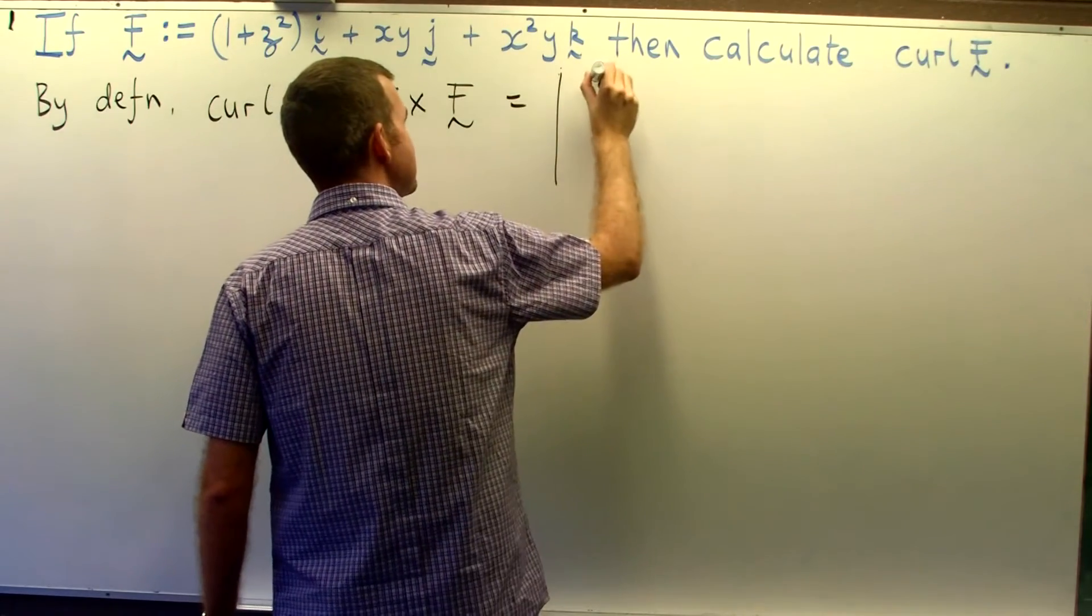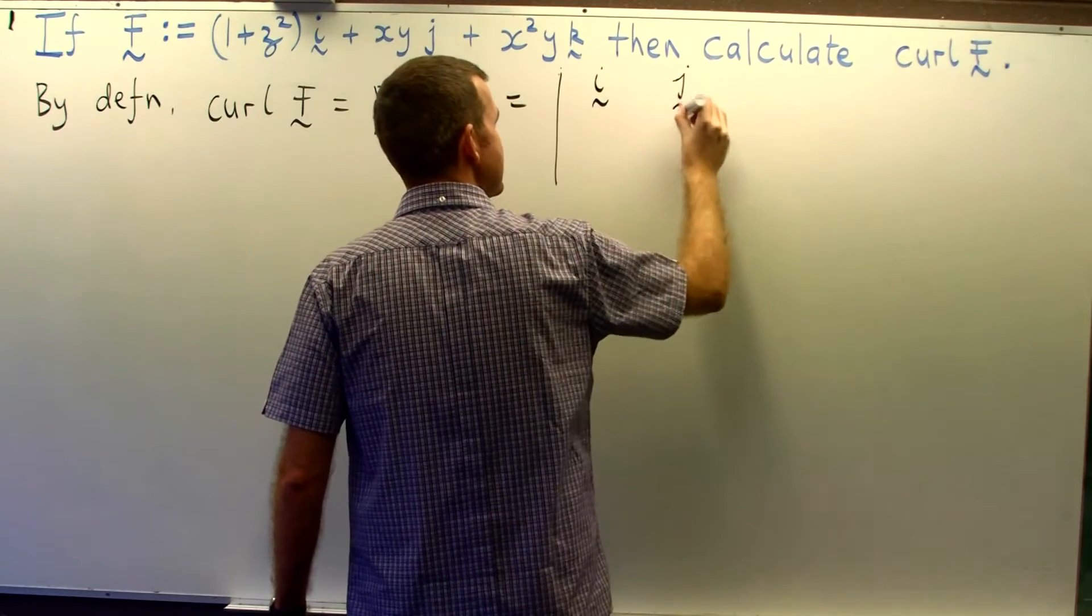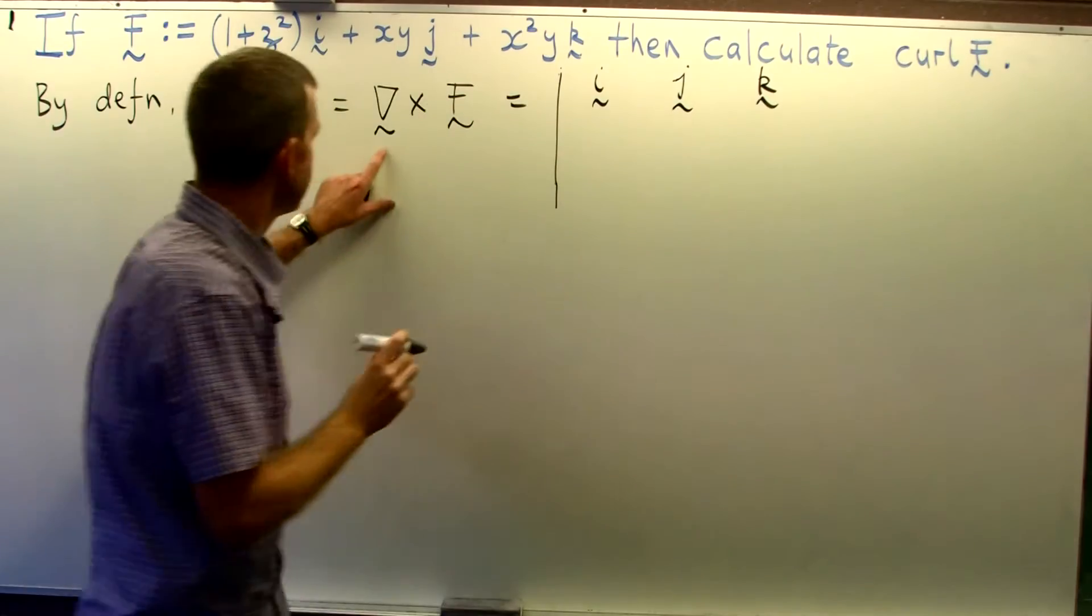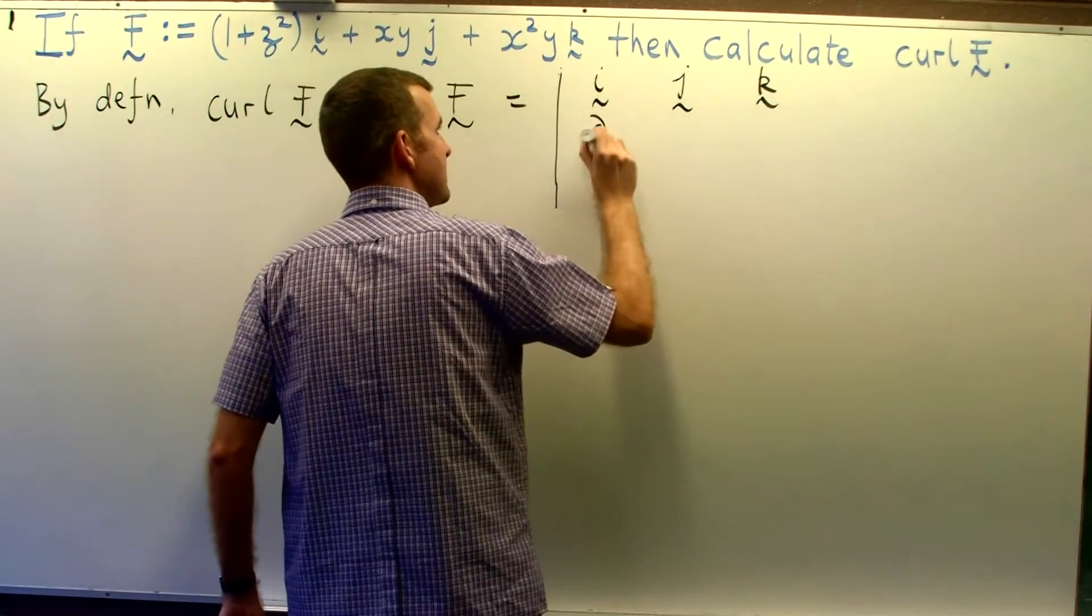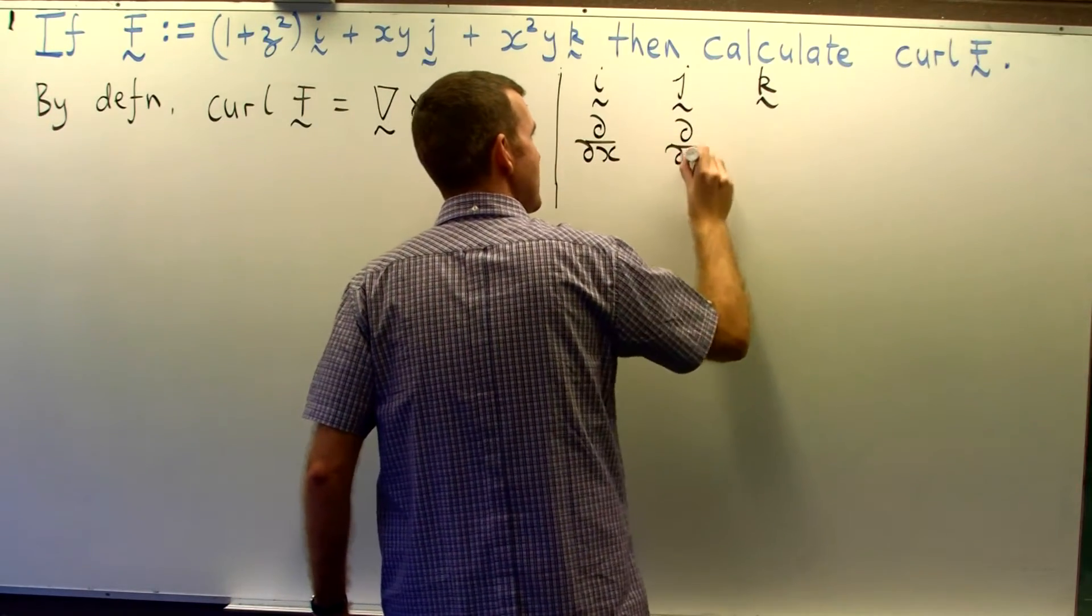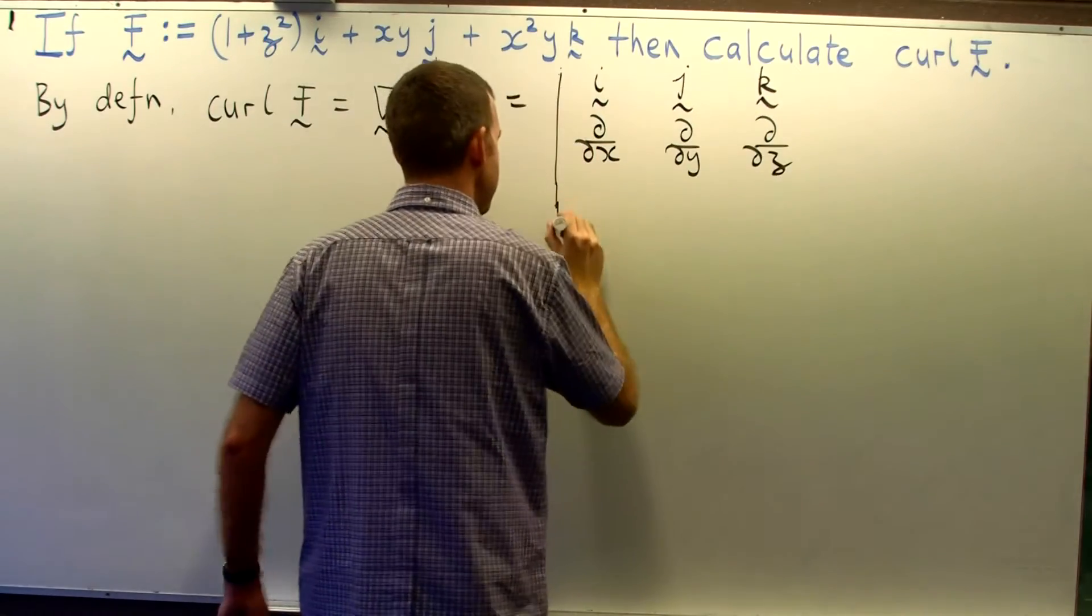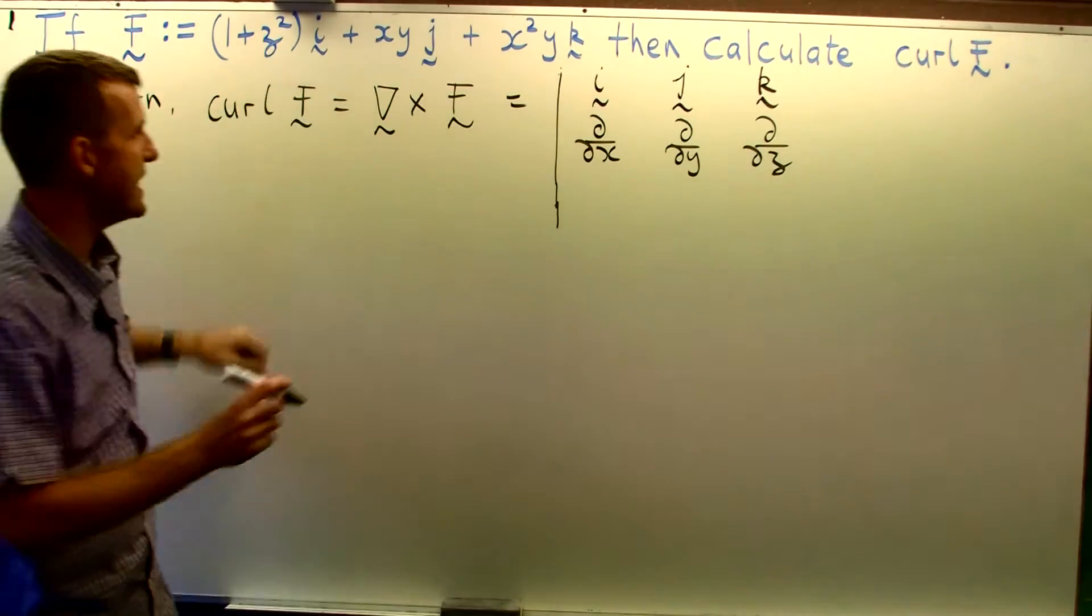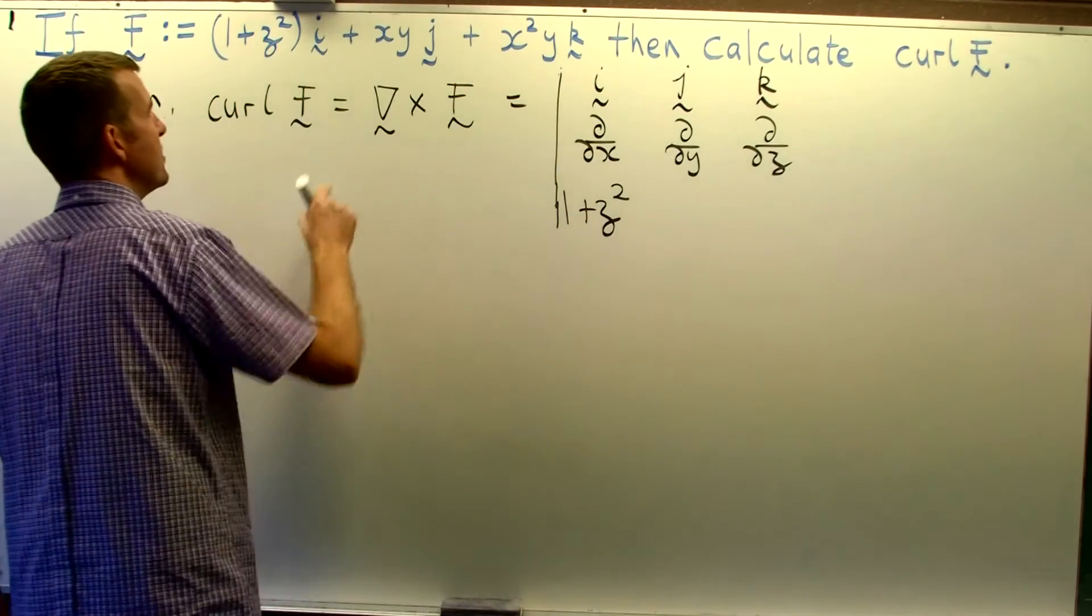Now if I write this all as a determinant this symbolic vector is just d dx d dy d dz and the components of my vector field f are just written in the bottom row.